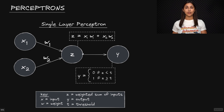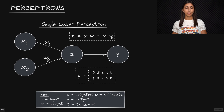The perceptron also has a predefined threshold that we compare Z against. How Z compares to the threshold determines the final output from the perceptron, which we're calling Y. Y is a binary output, so we can generally think about the output from a single layer perceptron as zero or one.